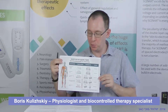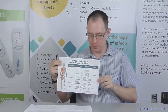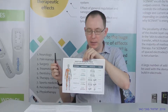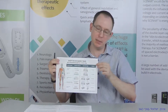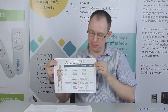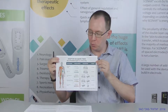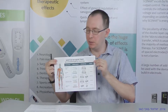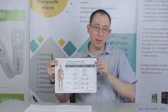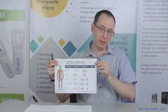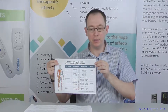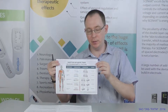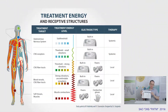Treatment energy and receptive body structures. At the sub-threshold energy level, the main target of the scanner is the autonomous nervous system. We can objectively see the body's reaction to a basically non-sensible influence. It is used in systemic therapy, including digital techniques and treatment of children. At this level, we usually use the built-in electrode of the device.